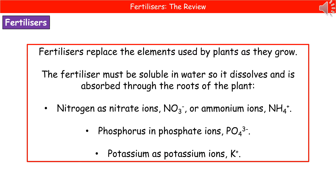Three key ion forms to remember: nitrogen will be absorbed as nitrate ions (NO3⁻) or as ammonium ions (NH4⁺). Phosphorus will be absorbed as phosphate ions (PO4³⁻), and potassium will be absorbed as potassium ions (K⁺). Make sure you remember it's nitrate ions or ammonium ions that deliver nitrogen into the plant.